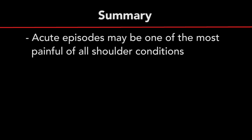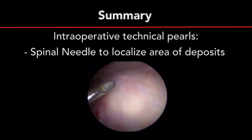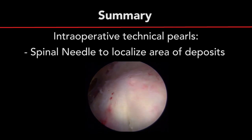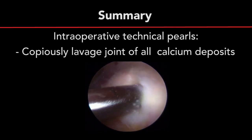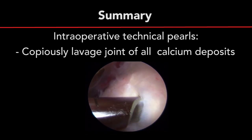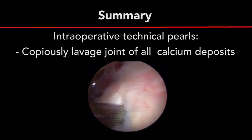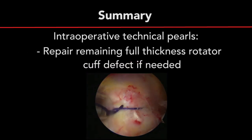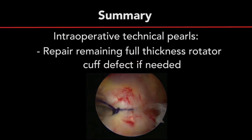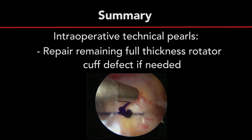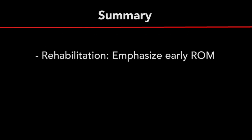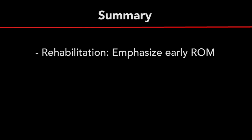In summary, acute episodes of calcific tendinitis may be one of the most painful of all shoulder conditions. Intraoperative technical pointers include the use of a spinal needle to localize the area of calcification. It is important to copiously lavage the joint of all calcium deposits, as leaving calcium in the joint increases the risk of postoperative stiffness and adhesive capsulitis. If a full-thickness rotator cuff tear is created, this should be repaired using the surgeon's discretion for optimal repair technique. Postoperatively, an emphasis should be placed on early range of motion to prevent stiffness, one of the most common complications following arthroscopic treatment of calcific tendinitis.